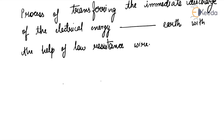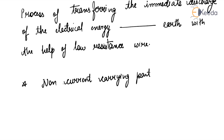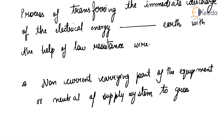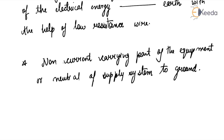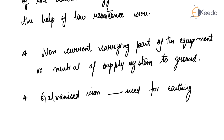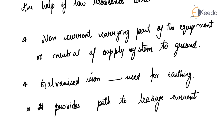Electrical earthing is done by connecting the non-current carrying part of the equipment or the neutral of the supply system to ground. For earthing, galvanized iron is mostly used. Earthing provides a simple path to the leakage current, and it protects the system and equipment from damage.